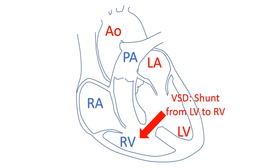Excessive flow in the circuit can cause heart failure in an infant. This is because the immature left ventricle of the infant has more mitochondria than contractile elements and cannot accommodate the higher workload.